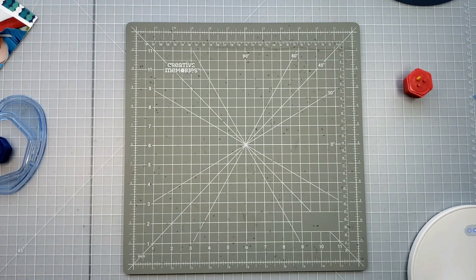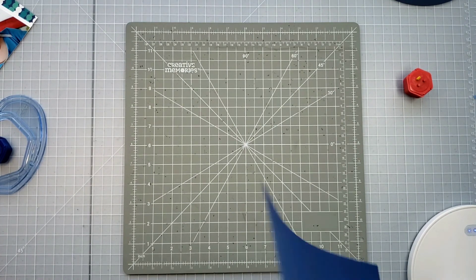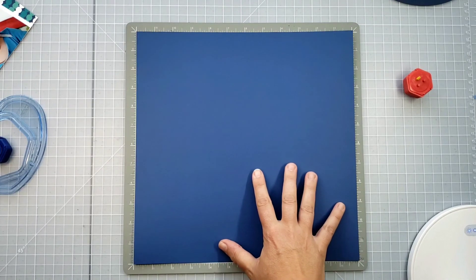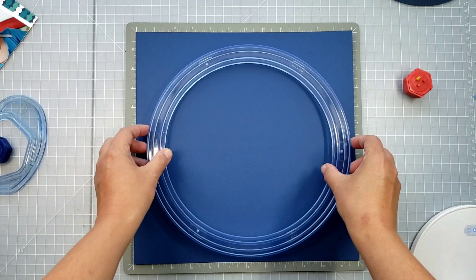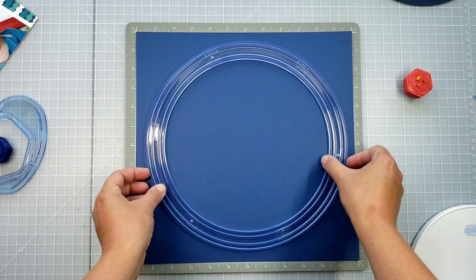The next sheet I'm going to use is a 12x12 piece of royal cardstock, or excuse me, this is blue. This is the new blue that came out this year. Once again, I'm going to center my custom template.